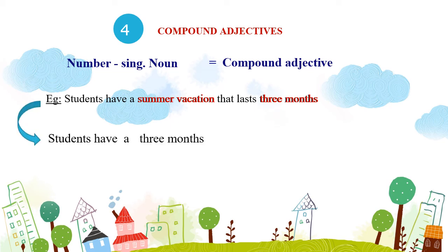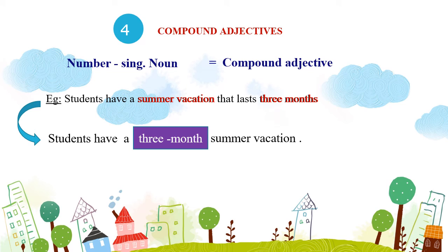"Students have a 3-month summer vacation." Ở đây chúng ta thấy "month" là danh từ của tính từ ghép, luôn luôn ở hình thức số ít, do đó chúng ta phải bỏ chữ S và thêm dấu gạch ngang ở đằng trước nó. "3-month" gọi là Compound Adjective – tính từ ghép, đứng trước danh từ chính "summer vacation", bổ nghĩa cho danh từ chính đó. "Students have a 3-month summer vacation." – Học sinh có một kỳ nghỉ hè 3 tháng.